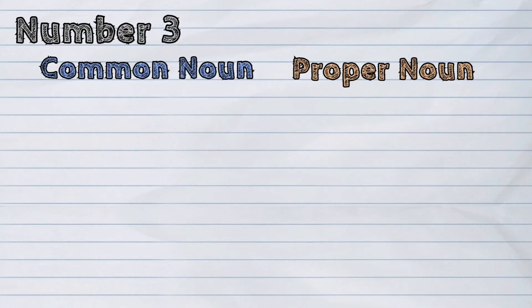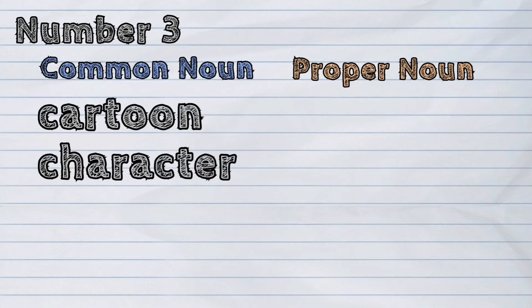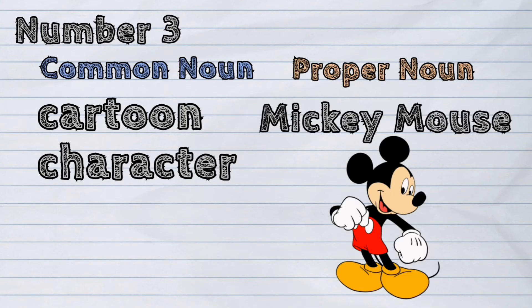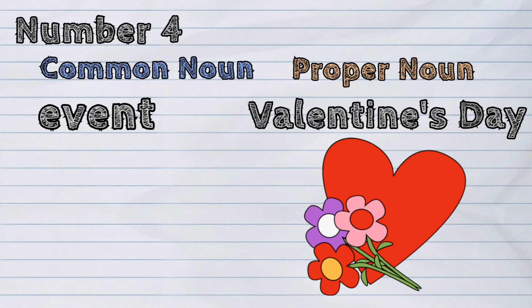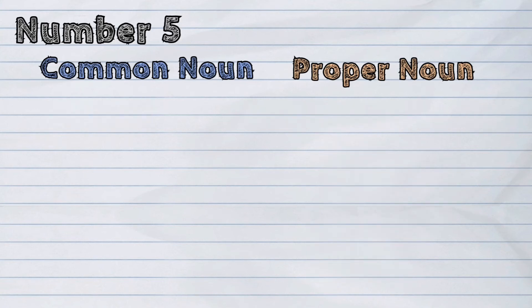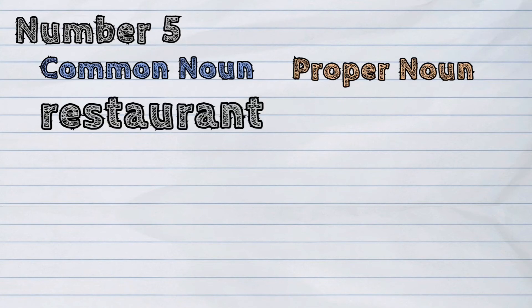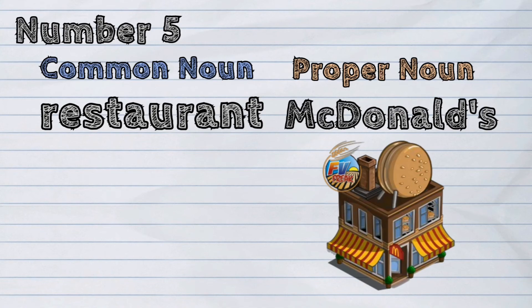Number 3: for common noun, cartoon character. Its proper noun, Mickey Mouse. Number 4: for common noun, event. Its proper noun, Valentine's Day. Number 5: for common noun, restaurant. Its proper noun, McDonald's.